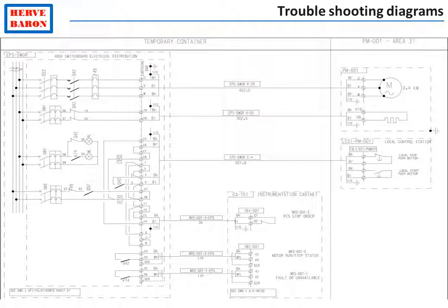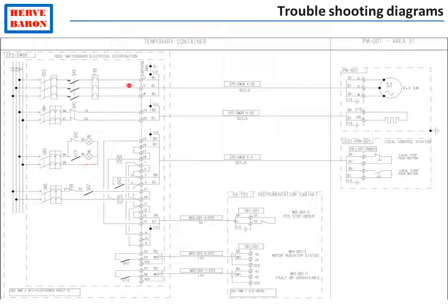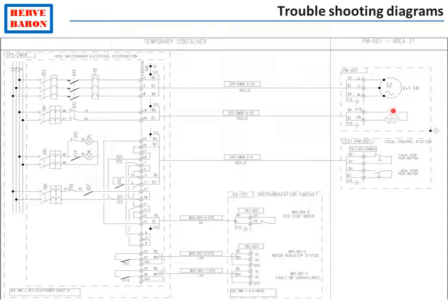Similarly to the instrumentation loop diagram which shows all information related to one instrument, the electrical troubleshooting diagram shows all information related to each consumer — including the reference of the switchboard and cubicle, numbering of terminals, tags of cables, and connections with other systems such as the process control system and emergency shutdown system. This drawing is used for troubleshooting: if there is any issue with a particular power consumer, this drawing shows exactly where to check.